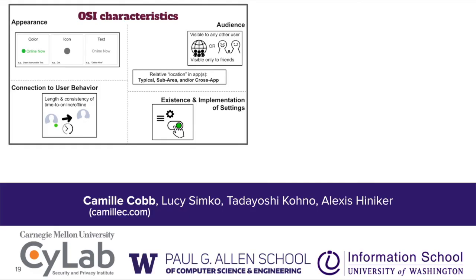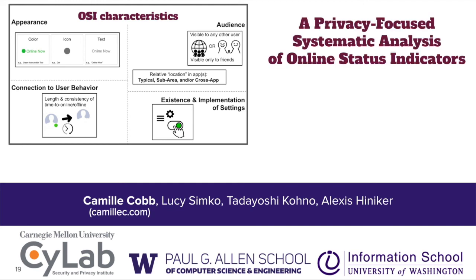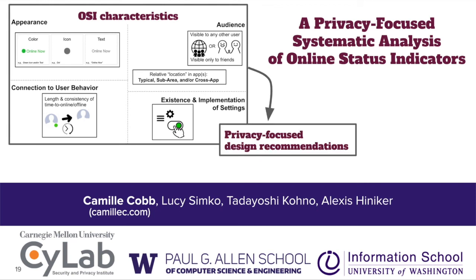So in this talk and in this paper, we've presented a privacy-focused systematic analysis of online status indicators. We identified 40 apps with OSIs and taxonomized four dimensions of OSI characteristics: appearance, audience, connection to user behavior, and the existence and implementation of settings. Further, we've surfaced privacy-focused design recommendations that could give users more control of their self-presentation via OSIs.